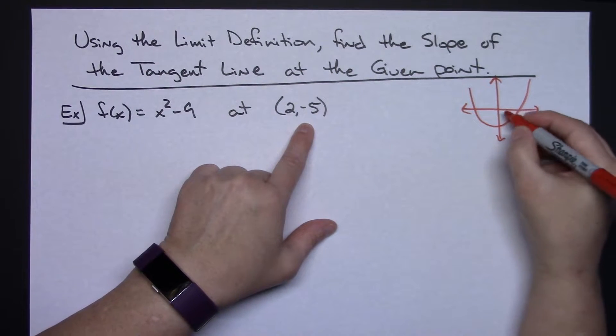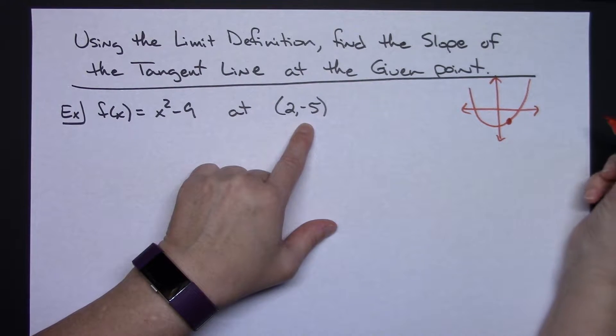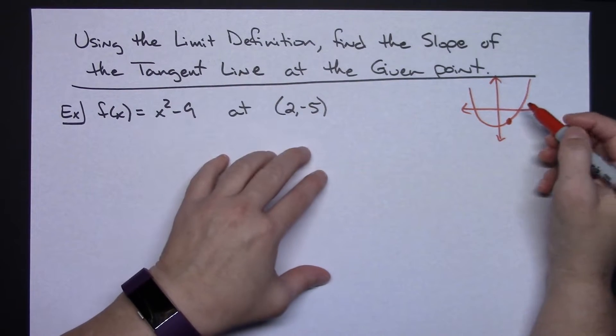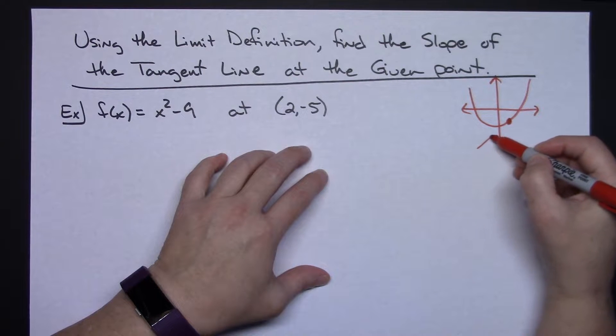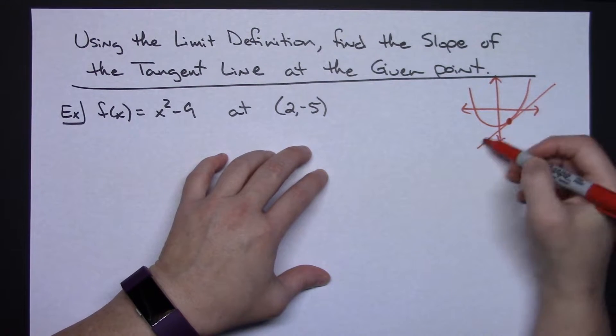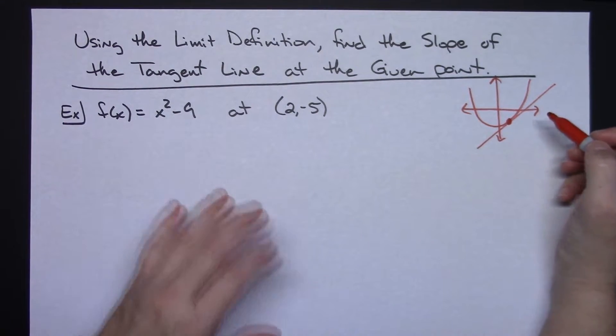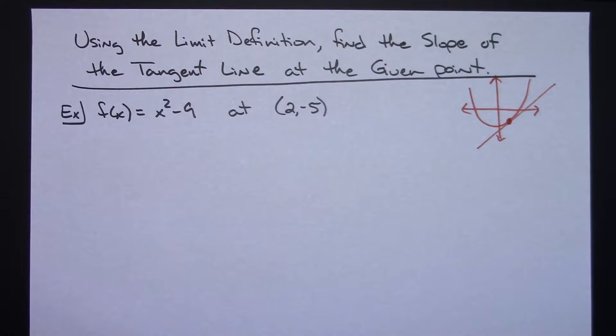At the point 2 negative 5, let's say it's roughly right about there. What I'm asking for in this question is I want the slope of that tangent line at that point to that curve.